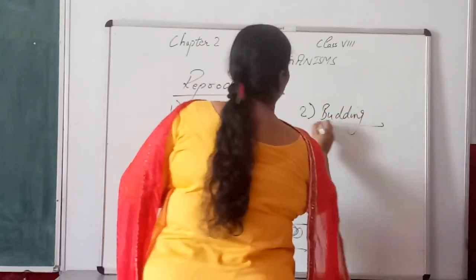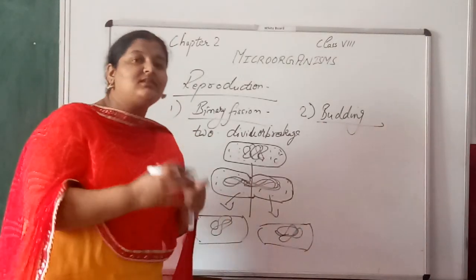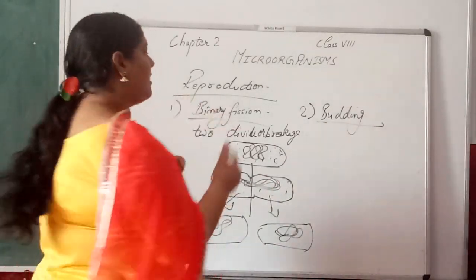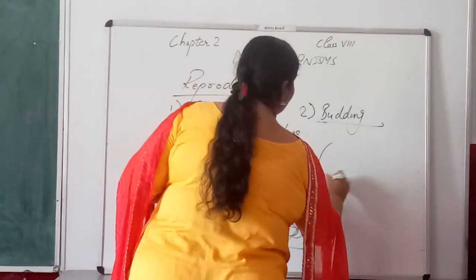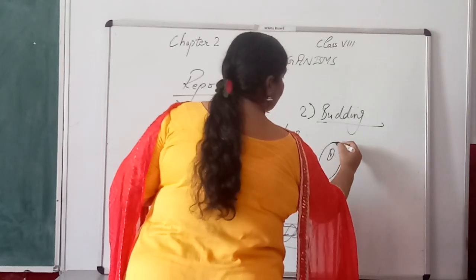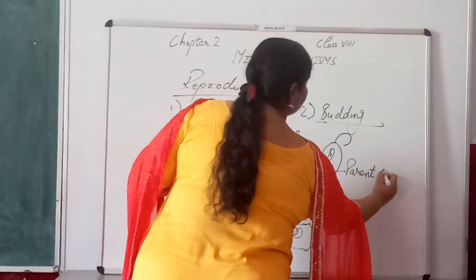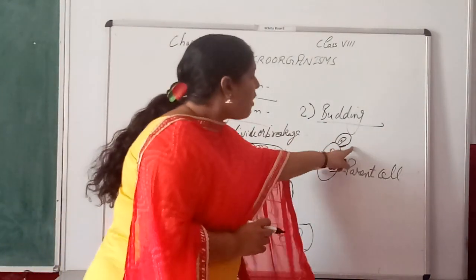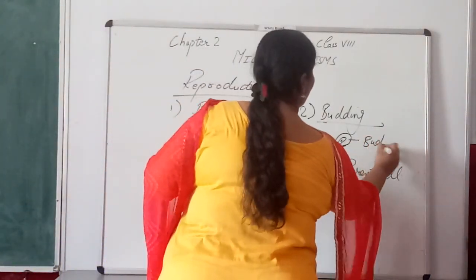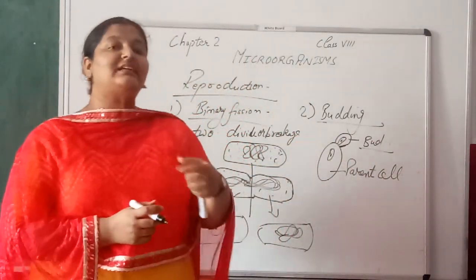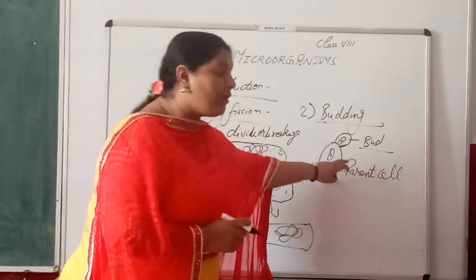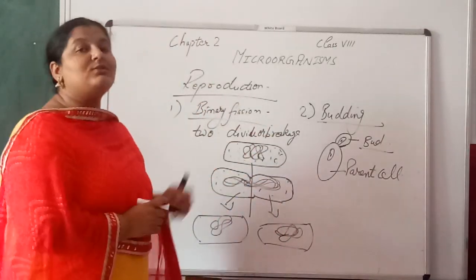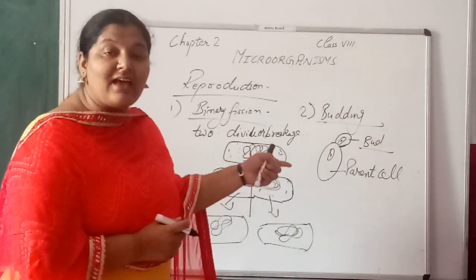Budding is the process where the parent cell lets out a small outgrowth from its body — this outgrowth is known as a bud. The example is yeast. This bud, after growing up to a certain size, gets detached from the parent body and grows individually as a proper new individual. This process is known as budding.